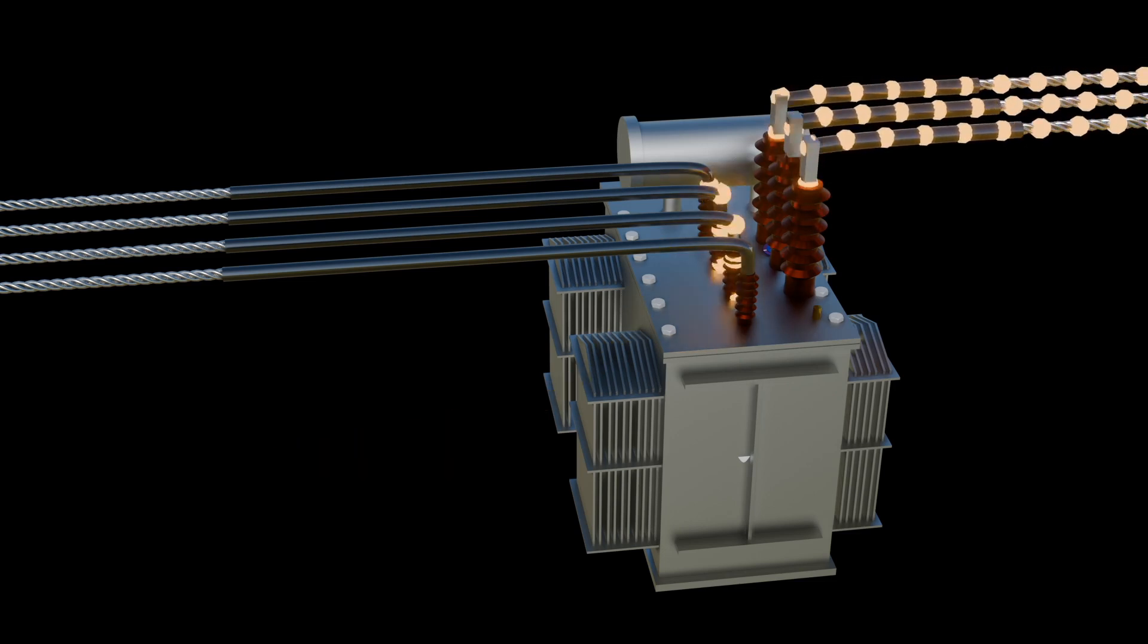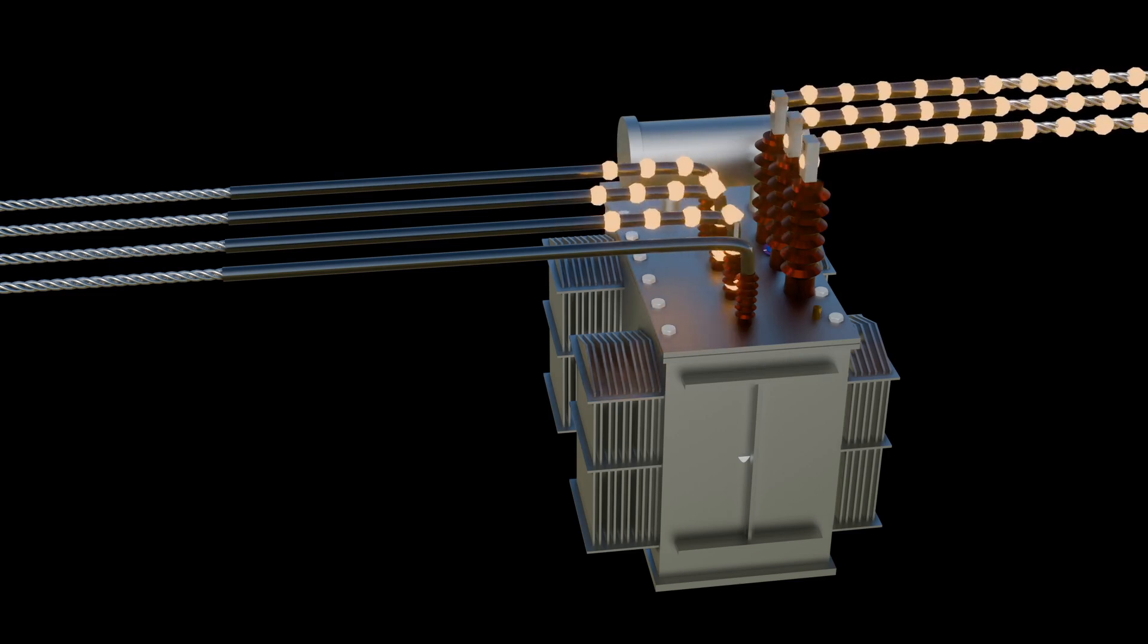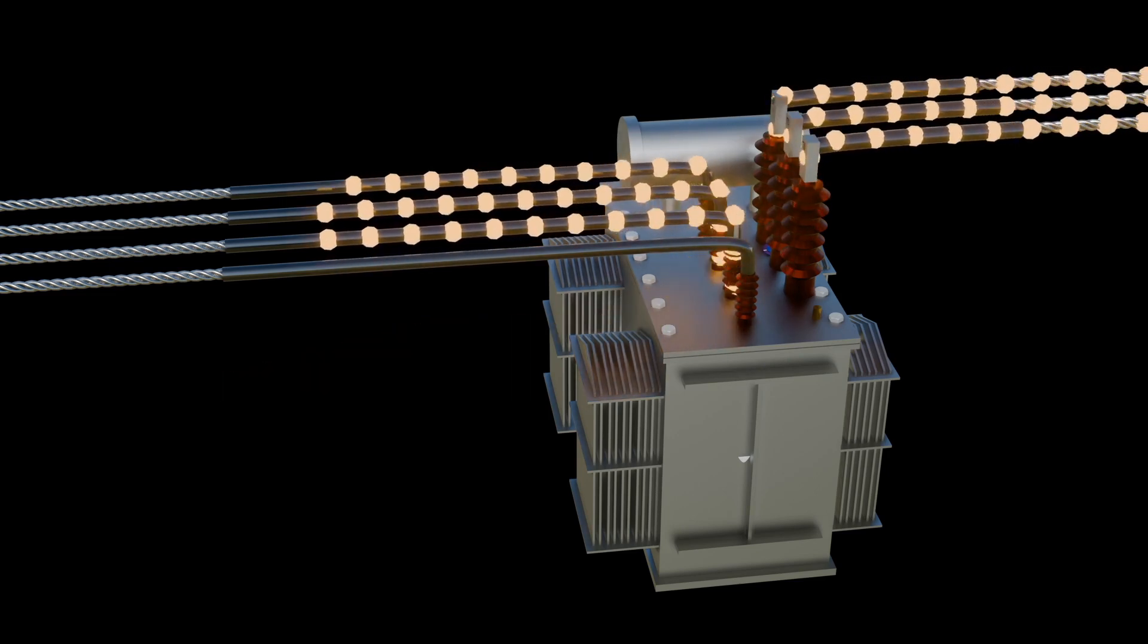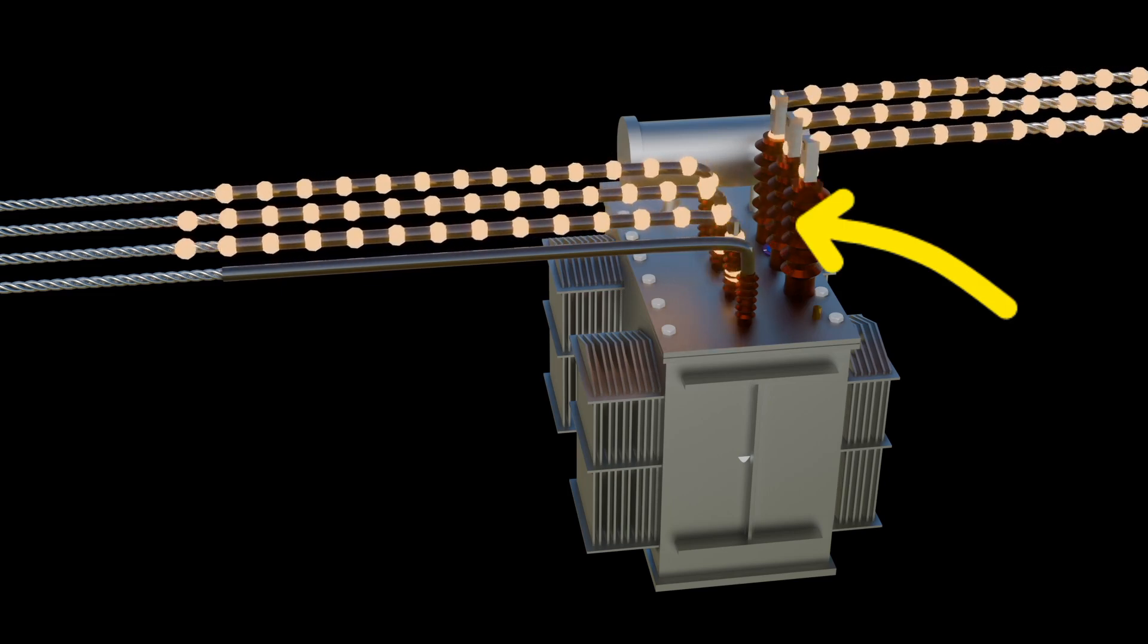There are two categories of bushings in transformer: for low voltage is called LV bushings, and for high voltage is called HV bushings.